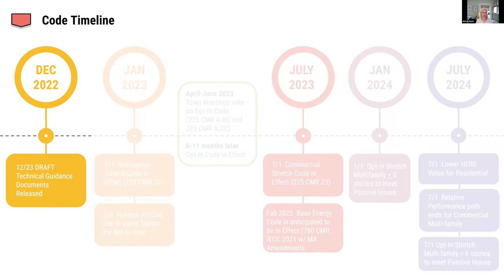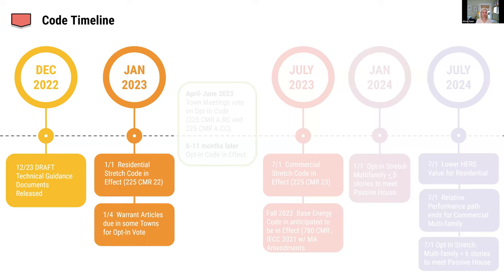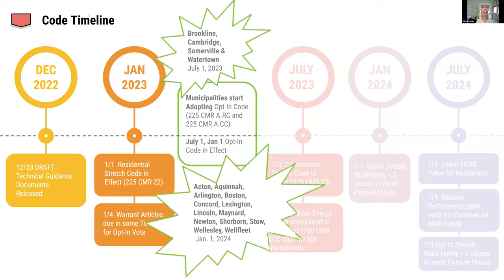On the timeline: technical guidance documents were released in January of this year, the residential stretch code was in effect, and some towns voted on the opt-in specialized code. A whole bunch of towns and cities are adopting the code, either going into effect now in July or in January next year, depending on when they voted, creating a six-month rolling adoption as we go forward.